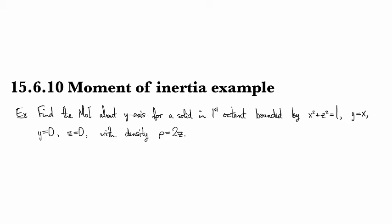Alright, so let's do an example for a moment of inertia. We're going to find the moment of inertia about the y-axis for a solid in the first octant bounded by the cylinder x squared plus z squared equals 1.